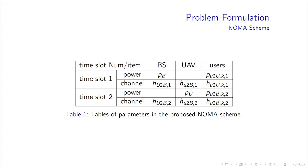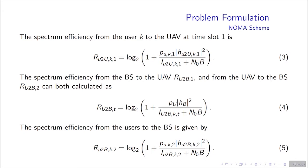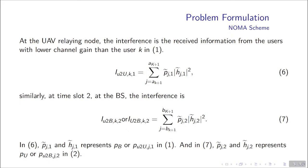According to Shannon's formula, the spectrum efficiency for the user K to the UAV at time slot 1 is given as function 3. The spectrum efficiency from the base station to the UAV and from the UAV to the base station U2B2 can both be calculated as function 4. The spectrum efficiency from the users to the base station is given as function 5. And the interference in functions 3, 4, and 5 are given as function 6 and 7.